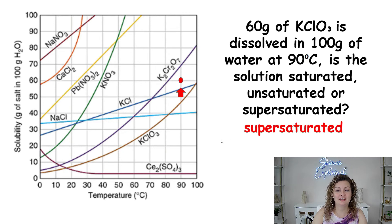Let's check it out. So we are looking for KClO3, which is going to be this brown line right here. And then we need to look for 60 grams. Here's 60 grams. And we're going over to 90 degrees. So here is our little dot. And we want to know, is it saturated, supersaturated, unsaturated? Well, this is our brown line we're looking at, and it is clearly above the brown line.